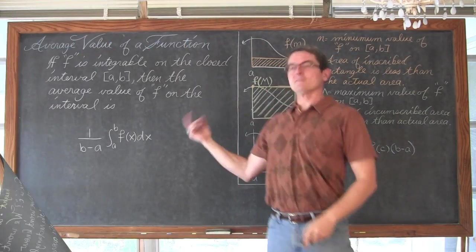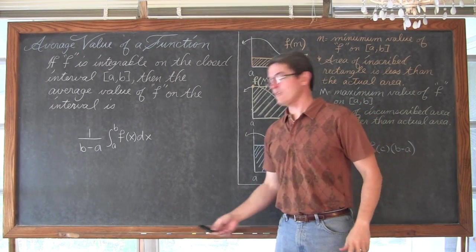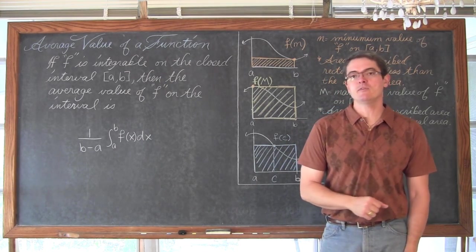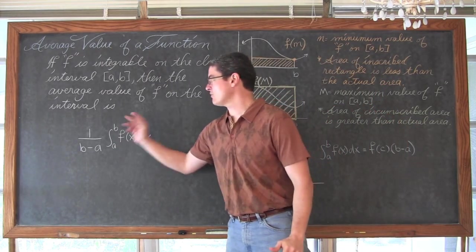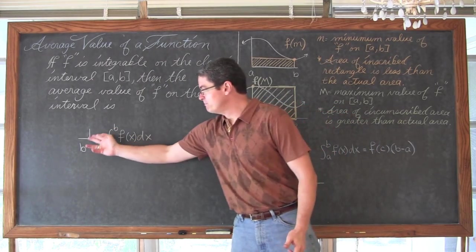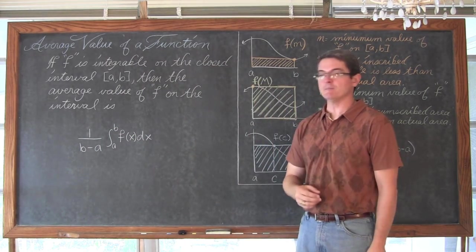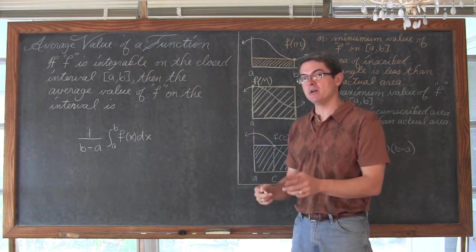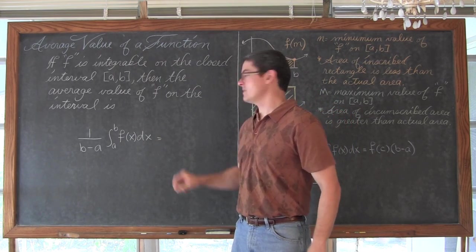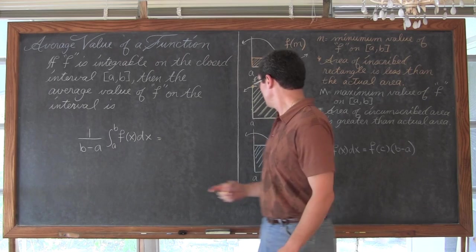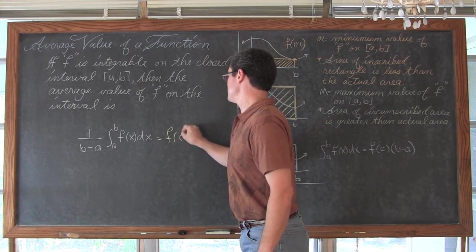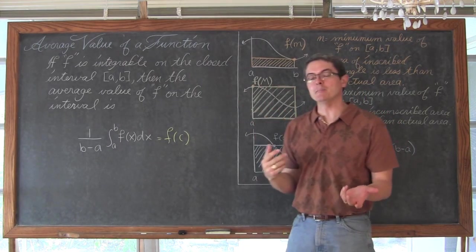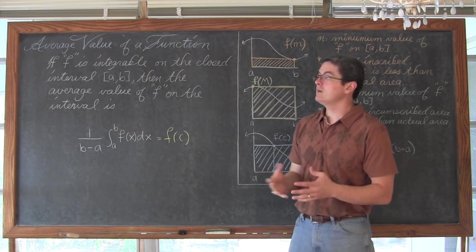BAM! Here we go. The average value of a function. If f is integrable on a closed interval of ab, then the average value of that function f on the interval is given by the definite integral from a to b of f dx multiplied by 1 over b-a. Now this is how my textbook gives you the average value of a function. But if I add a little bit to it here and say that this is going to be equal to the height of the rectangle, then this is equal to f of c. So you can see all they did with our previous theorem is divide both sides by b-a and voila! You have the average value of a function.